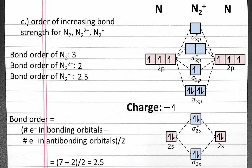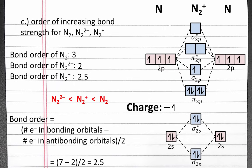Bond strength increases with increasing bond order. So the order of increasing bond strength is N2²⁻ (bond order 2), then N2⁺ (bond order 2.5), and then N2 (bond order 3).